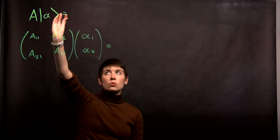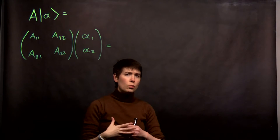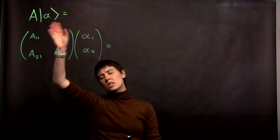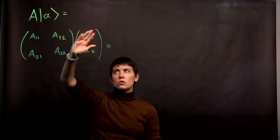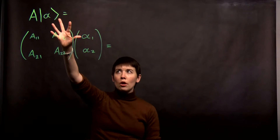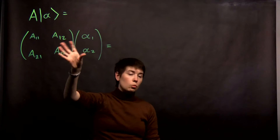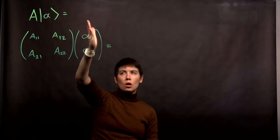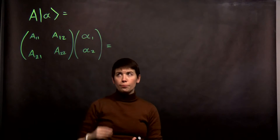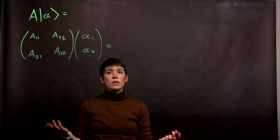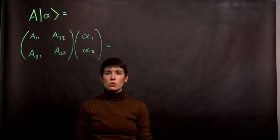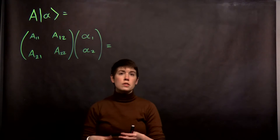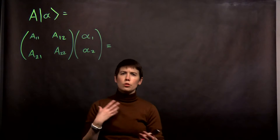An operator applied to a state — we have to ask the question, what is that going to do? Even if you have no idea what an operator is or what a ket state is, you know how to work with this. This is a 2x2 matrix applied to a column vector, so what this looks like is multiplication. We can ask: are we going to get a scalar, a vector, a row or column, or another matrix?